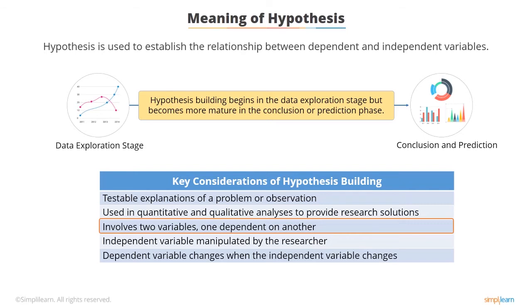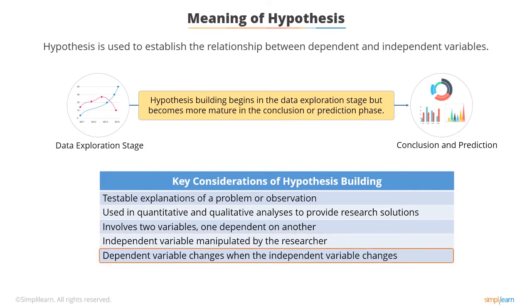Hypotheses that suggest a causal relationship involve at least one independent and one dependent variable — in other words, one variable which is presumed to affect the other. For example: holiday season in the year increases traffic and purchases on the website. An independent variable is one whose value is manipulated by the researcher or data scientist. A dependent variable is one whose values are presumed to change as a result of changes in the independent variable.